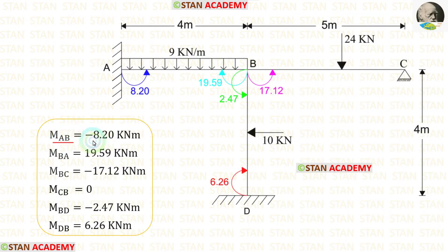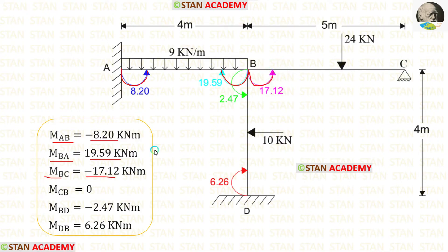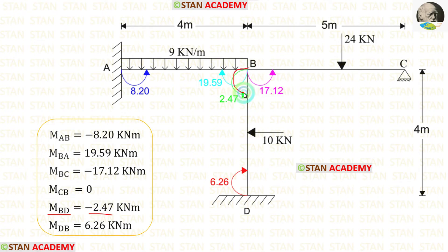MAB has a negative value, meaning it acts in the anti-clockwise direction. MBA has a positive value, meaning it acts in the clockwise direction. MBC has a negative value, so it acts in the anti-clockwise direction. MDB has a positive value, meaning it acts in the clockwise direction.